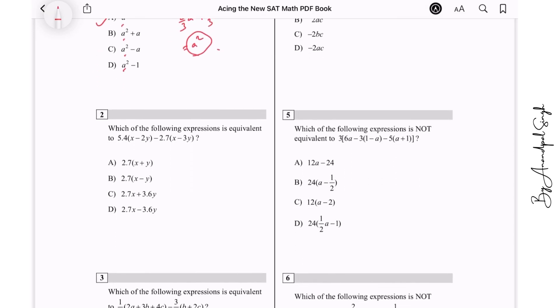Which of the following expression is equivalent to this? See, 5.4 times x minus 2.7 times x, so we have 2.7 times x. Yes, it is available in all the options. Then we multiply 5.4 by 2y, so it gives you minus 10.8y and plus 8.1y, so that will be minus 2.7y. So 2.7x minus 2.7y gives you 2.7 times (x - y), so B is the answer.